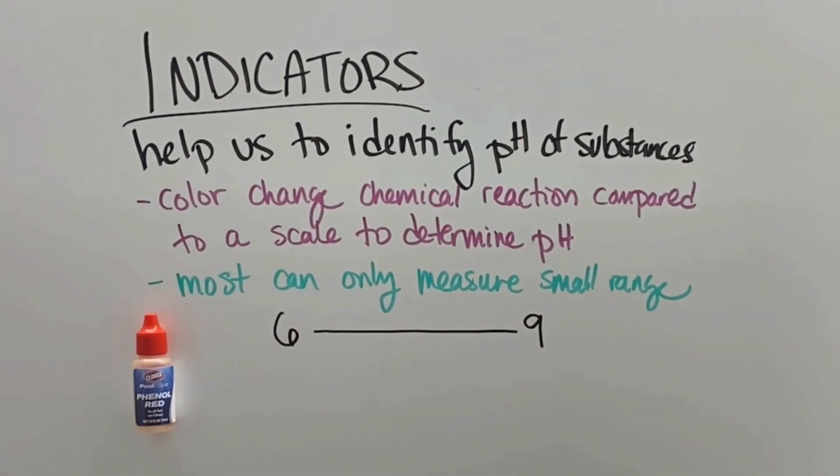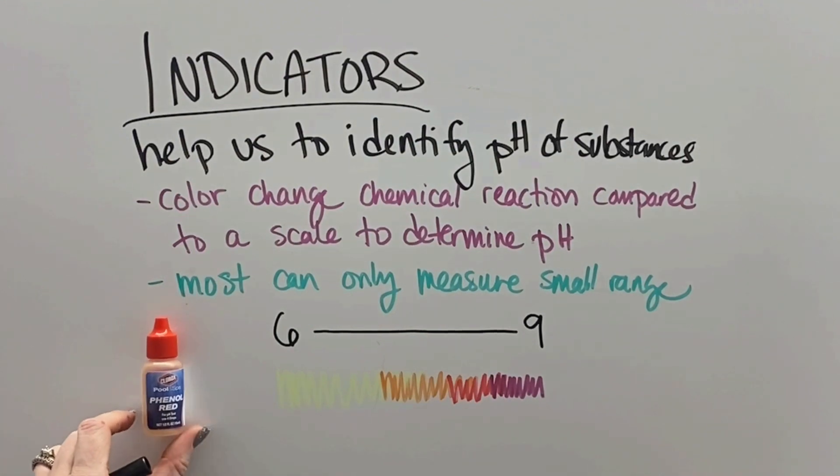So there's other chemical indicators that then once we know if something is an acid or if something is a base can give us an idea of how strong. Like phenyl red tells us if something is pH 6 to 9. And so it ranges from yellow to a dark magenta, but it cannot tell us if something is higher than 9 or lower than 6.